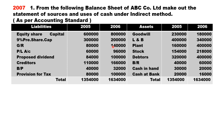Profit and loss account comes under operating activity — last year sixty thousand, current year ninety-six thousand. The net profit will be thirty-six thousand, that is ninety-six thousand minus sixty thousand equals thirty-six thousand, so it is called net profit.